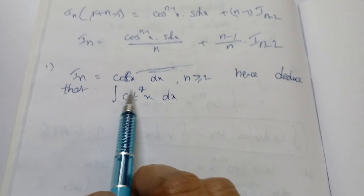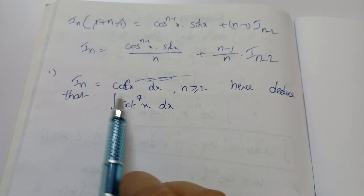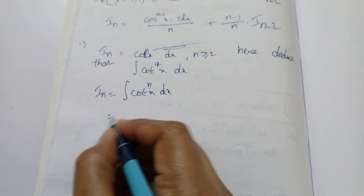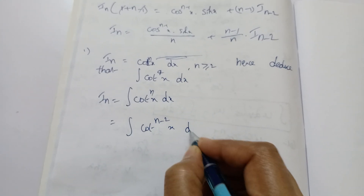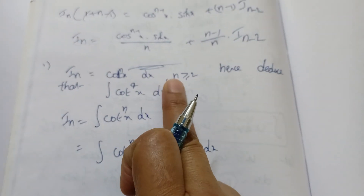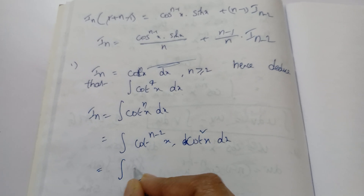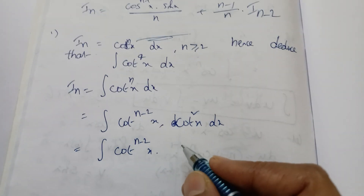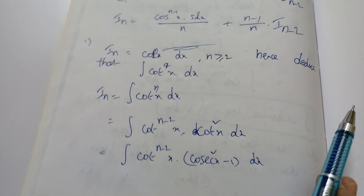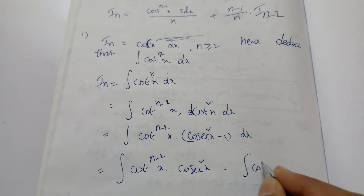Next question: I_n = ∫cot^n x dx, where n ≥ 2. We need to find the reduction formula and evaluate I_4. Since n ≥ 2, we split cot^n x as cot^(n−2) x · cot²x. Then I_n = ∫cot^(n−2) x · cot²x dx. Since cot²x = cosec²x − 1, this becomes ∫cot^(n−2) x · (cosec²x − 1) dx.